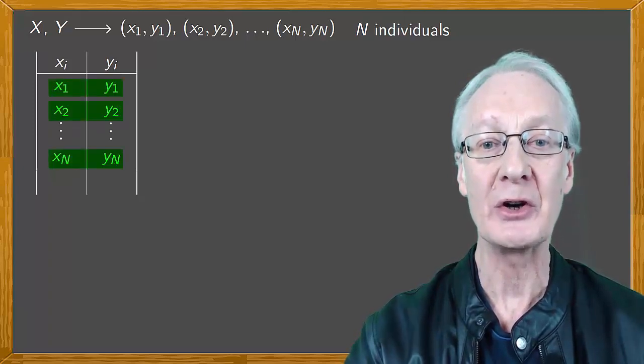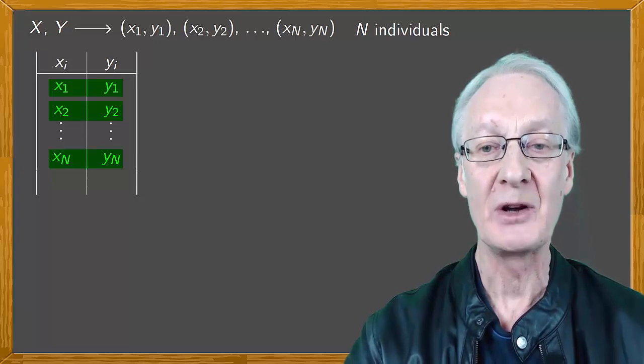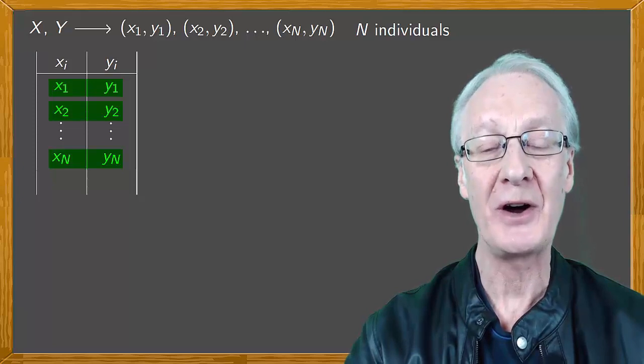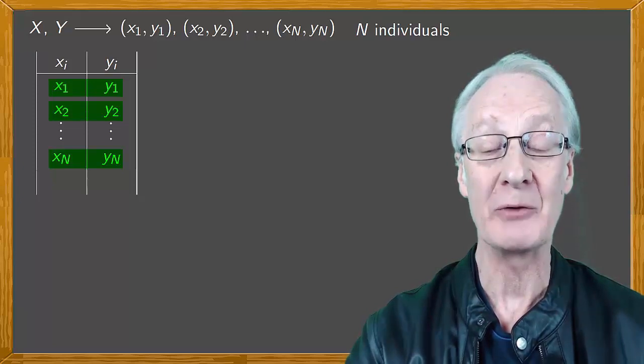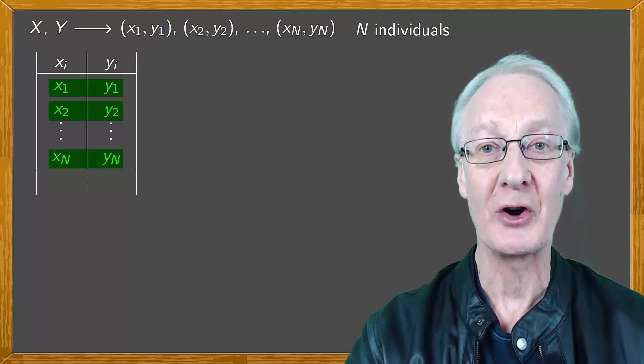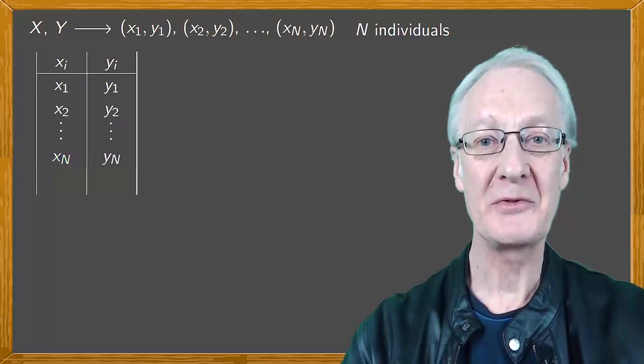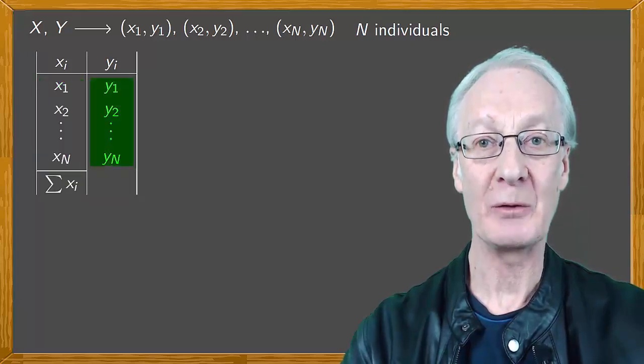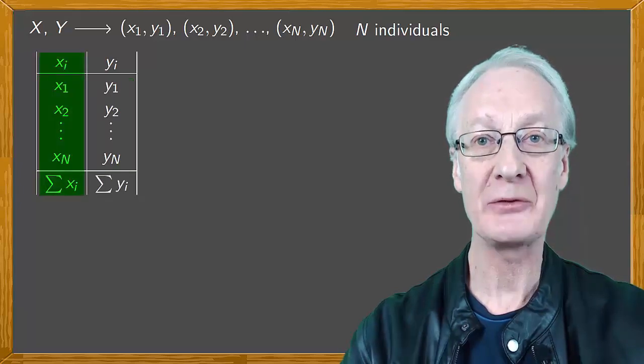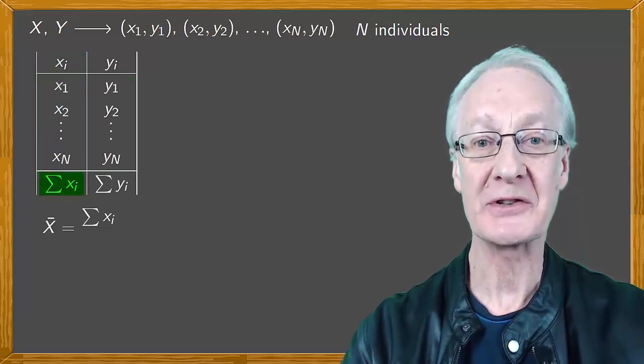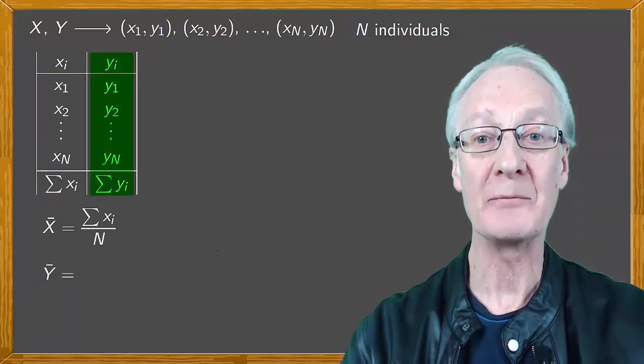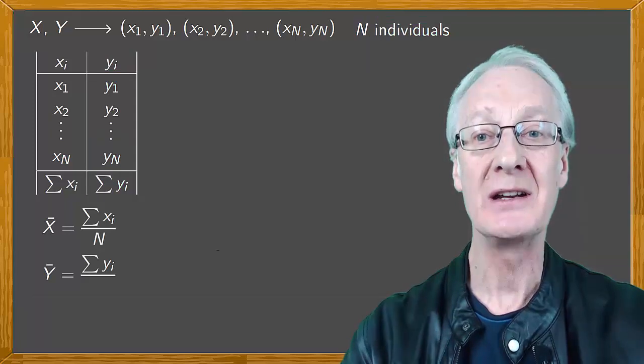If the same values occur more than once, we'll include as many rows as there are repetitions. This works fine, providing we don't have too many repetitions. Otherwise, we'd need an extra column with the absolute frequencies. At the bottom of the two columns we write the sum of the xi's and of the yi's and from these we can obtain the mean of x, which is the sum of the xi's divided by the number of data items n, and the mean of y, which is the sum of the yi's divided by n.